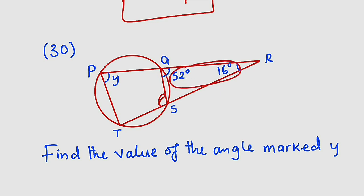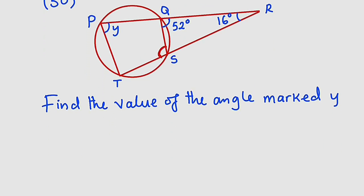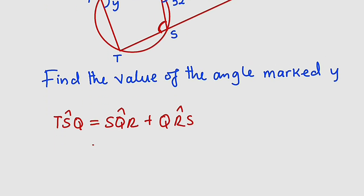So once you add these two together, you're going to get this. So the name of this angle is TSQ, and TSQ is equal to SQR plus QRS.